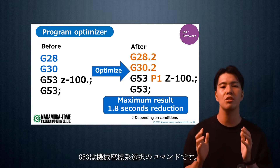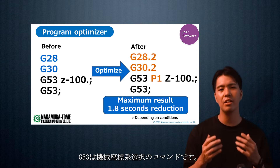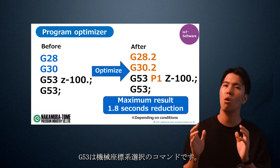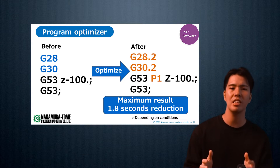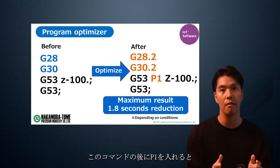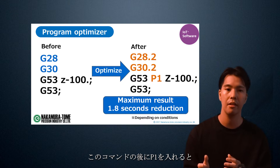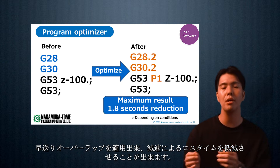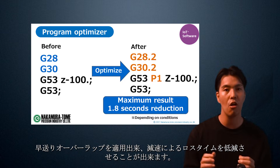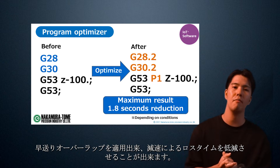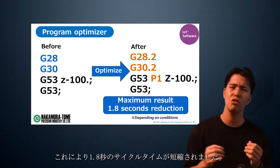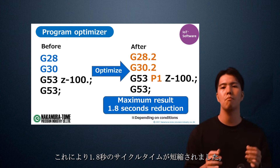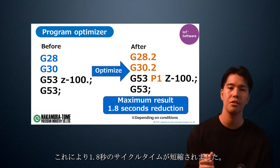G53 is a command for selecting the machine coordinate system. In this case, the system inserts P1 after that command, which allows use of rapid feed overlap. It reduces the loss time of deceleration. This reduces the cycle time by 1.8 seconds.